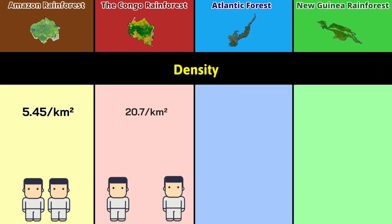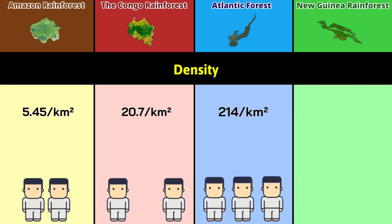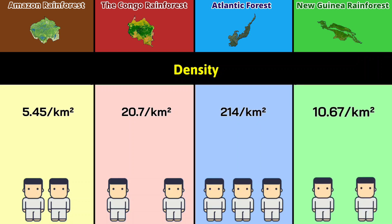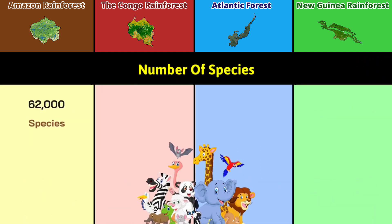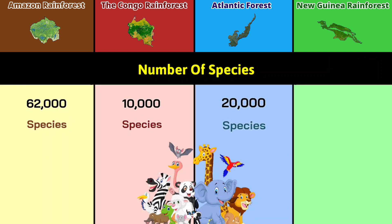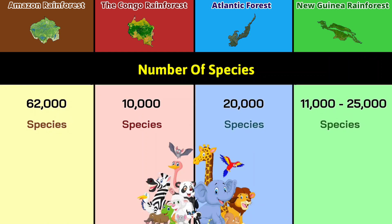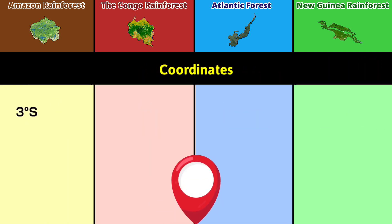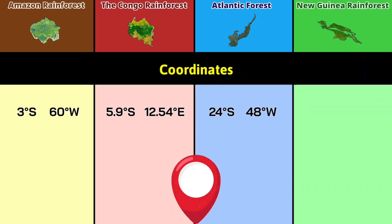Population density: 5.45 per square kilometer, 20.7 per square kilometer, 214 per square kilometer, and 10.67 per square kilometer. Number of species: 62,000 species, 10,000 species, 20,000 species, and 11,000 to 25,000 species. Coordinates: 3° South and 60° West, 5.9° South and 12.54° East, 24° South and 48° West, and 9.0° South and 147.85° East.